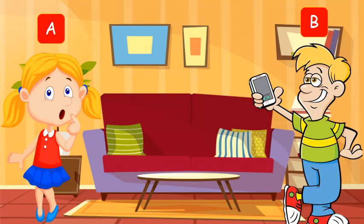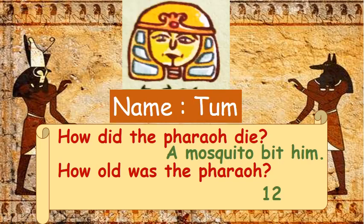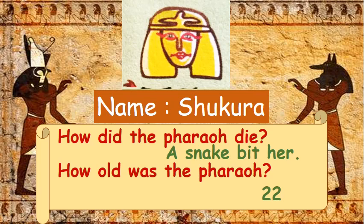Here are the pictures. This is the picture of Kakad — how did the pharaoh die? A snake bit her. How old was the pharaoh? 24. This one is Tomb — how did the pharaoh die? A mosquito bit him. How old was the pharaoh? 12. This one is Shukura — how did the pharaoh die? A snake bit her.